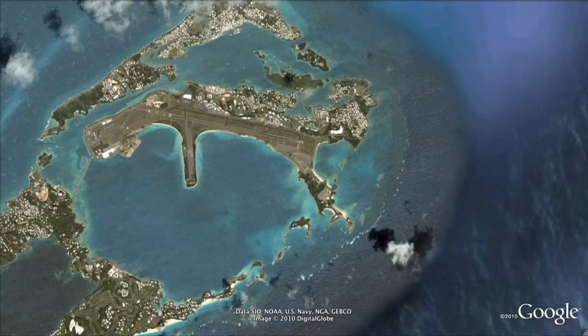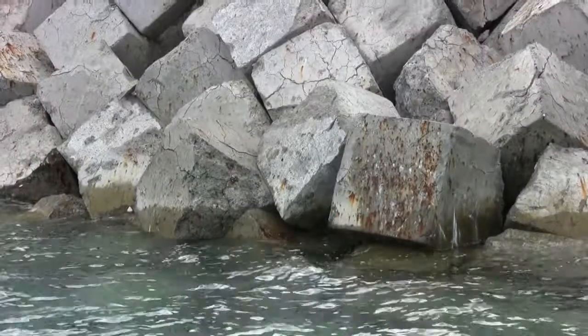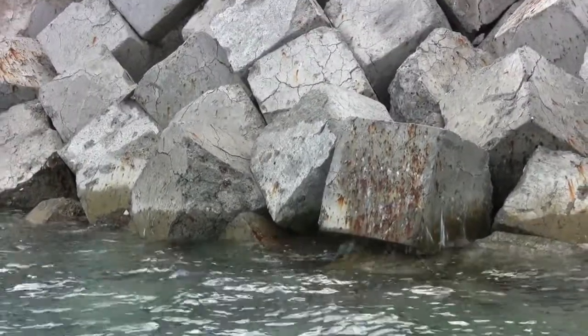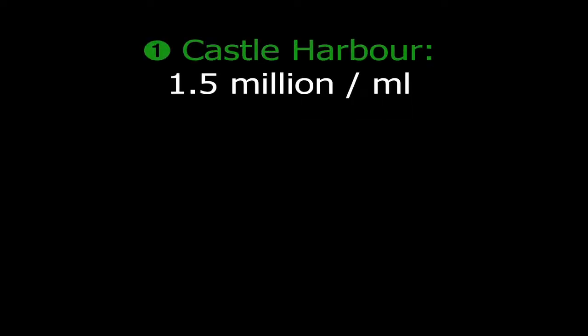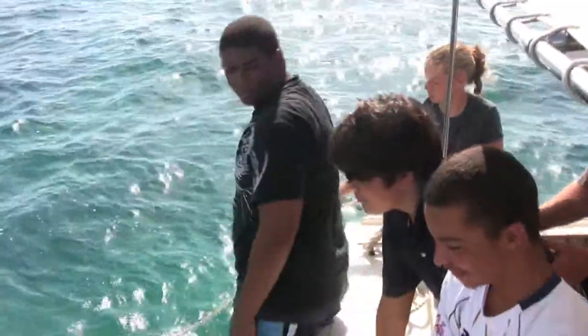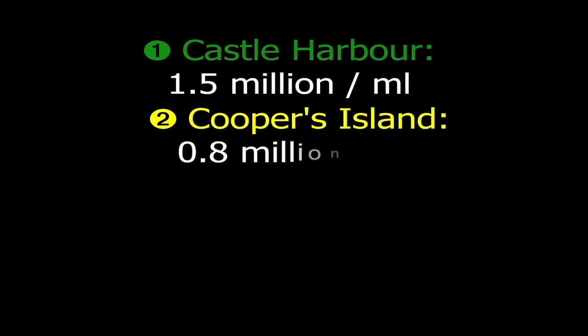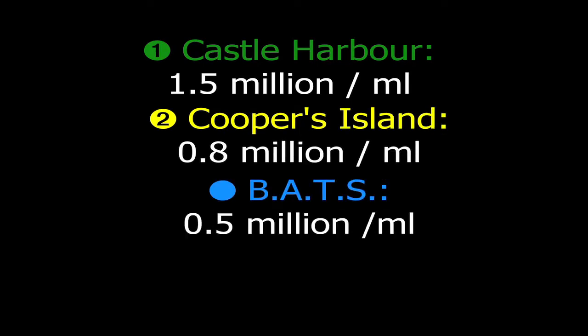At Castle Harbor, they sampled far away and close to the dump site. As they got closer to the dump site, the numbers increased to about 1.5 million cells per milliliter. At Cooper's Island, which is more offshore on the south shore where the water is more dynamic, they got 0.8 million cells per milliliter, which is similar to what you would see at the BATS site. Once you get out to the Cooper's Island area, you're basically considered offshore.